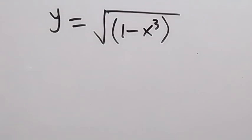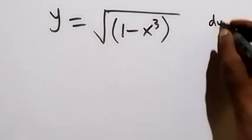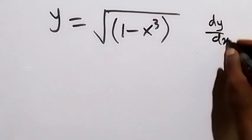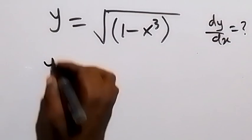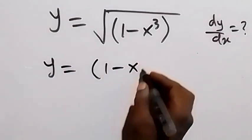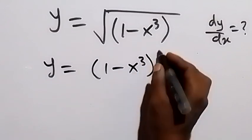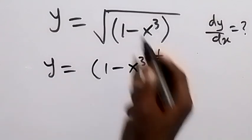Hello, you are welcome here. In this problem we want to differentiate and find the derivative of y with respect to x — that is, we want to find dy/dx. We write this as y equals 1 minus x cubed, then raised to power half, because square root is the same thing as raised to power half.